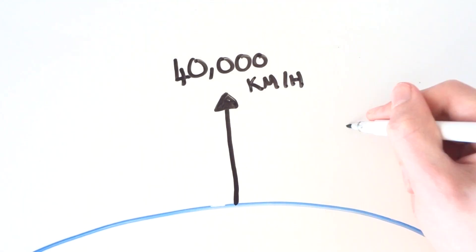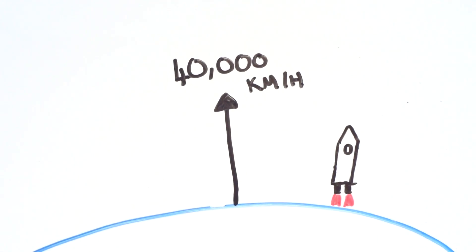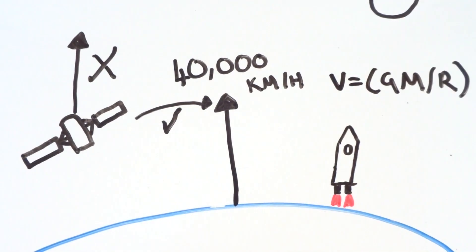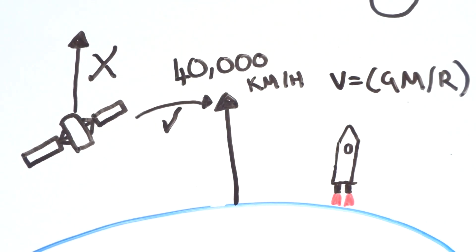If you want to escape Earth's gravity you have to fly at just over 40,000 km per hour. The point of a satellite though isn't to escape gravity, it's to orbit Earth, which means that you want to have just the right orbital velocity to balance gravity.